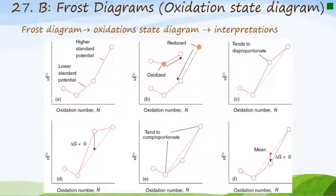A Frost diagram can be interpreted in several ways. The slide shows six different representations of various elements and oxidation numbers. Diagram A tells us how to measure reduction potential — the line with the higher slope has the higher standard potential, and the other line has the lower standard potential, giving us an idea of which couple has a lower or higher potential.